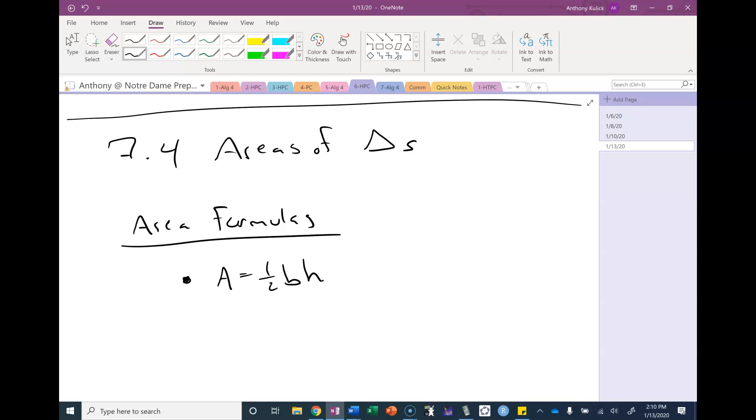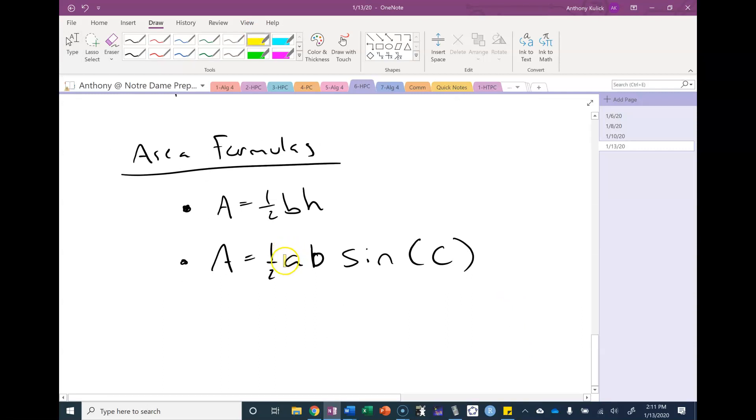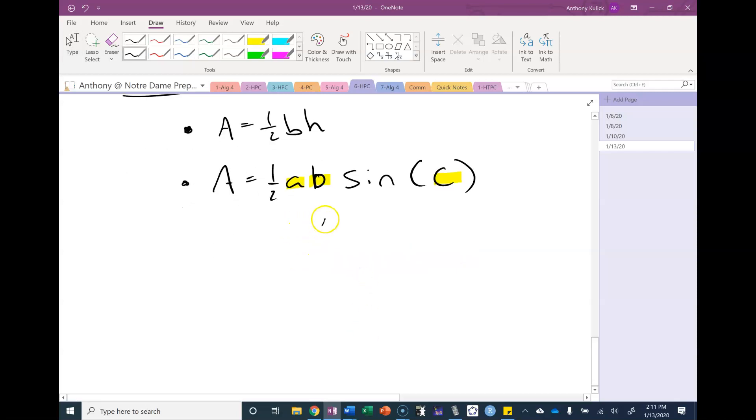The first formula we're going to look at is area equals one half A B sine C. There's three different versions of this formula depending on what angle you're using. But the thing I just remember is that the two sides and the angle all have different names, right? So if you had sides B and C, which angle would you need? A. So let's derive this real quick because it's not much to do here.